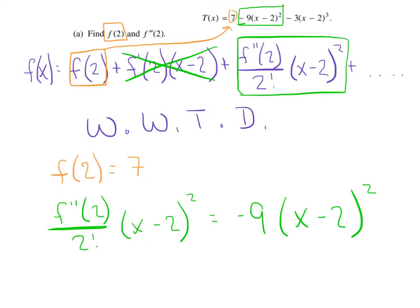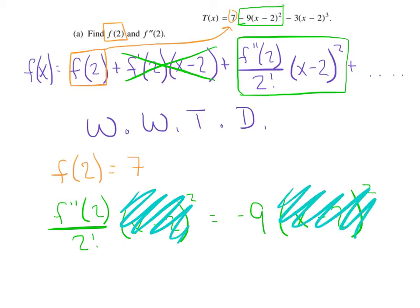Now if we did this correctly, what should happen every single time? This rascal should cancel out with this rascal every single time. So basically all we're going to do is take our two factorial, multiply it to the other side, and we can say that the second derivative evaluated at two is equal to negative 18.